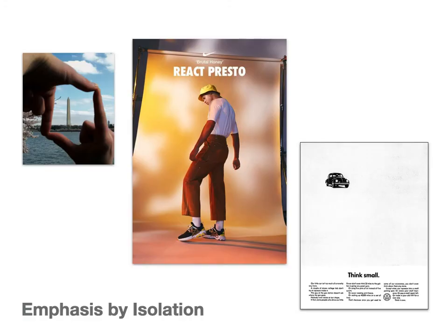Orientation also matters: a vertical object appears heavier than a horizontal object. The upper left to lower right diagonal is considered the most powerful design-wise — it carries the most visual weight. Emphasis by isolation: the figure in the middle is not only larger in scale but isolated from everything else by all that space around him, making him stand out as the most important element. Similarly in the Volkswagen ad, all that negative space around the car image serves to isolate it, and the hands in the upper left create a frame isolating the Washington Monument.